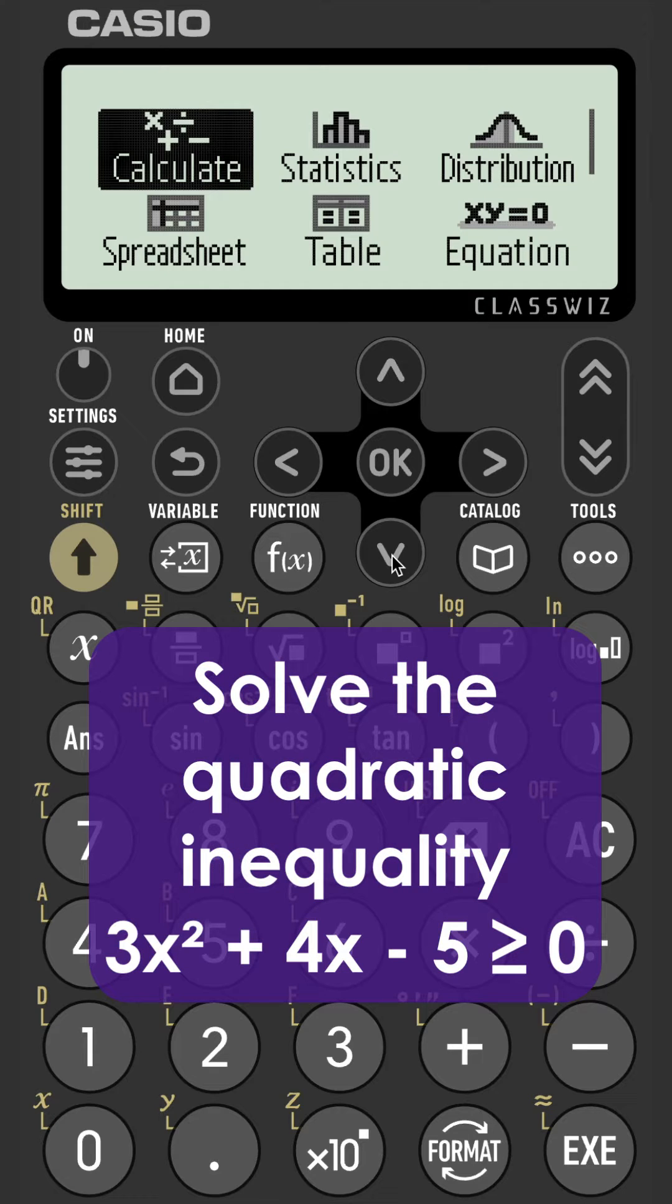We need to solve the quadratic inequality 3x squared plus 4x minus 5 is greater than or equal to 0.